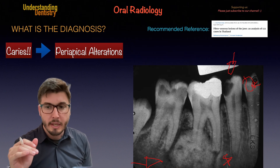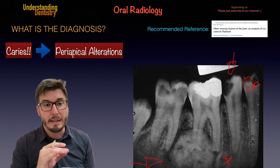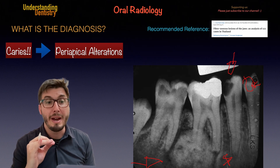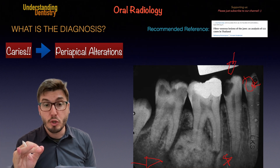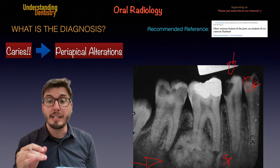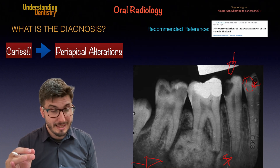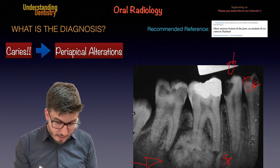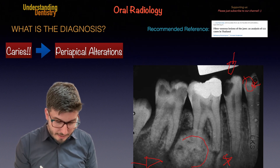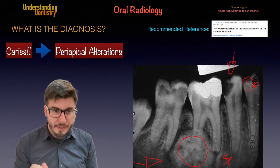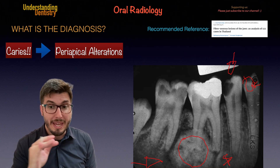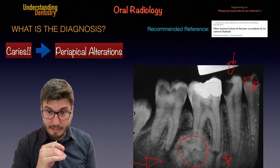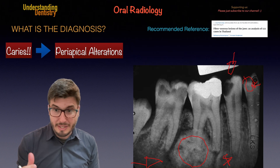So how to describe this lesion? We have a mixed lesion — it's well-limited, with a radiopaque lesion and a radiolucent halo. The lesion is heterogeneous in the sense that the radiopacity of the lesion is not the same. There are different levels of radiopaque densities here, because of the origin of this lesion.